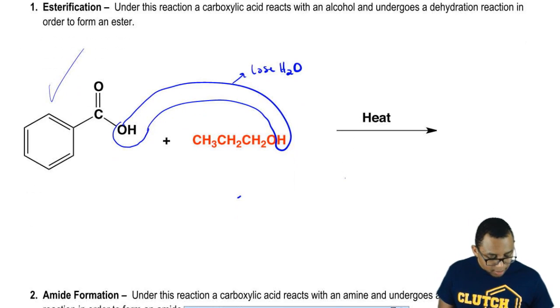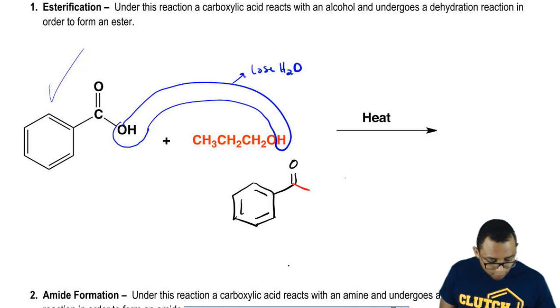We get here as our product at the end is our ester. Our ester would look like this. We have that and then here we have the OH from the alcohol plus the chain. This is our ester.